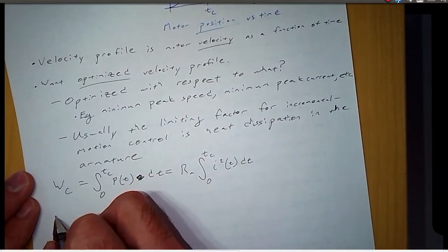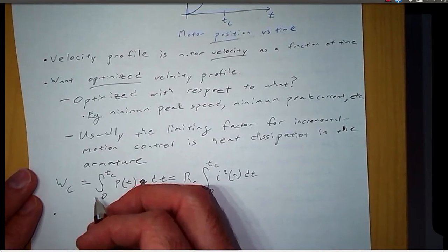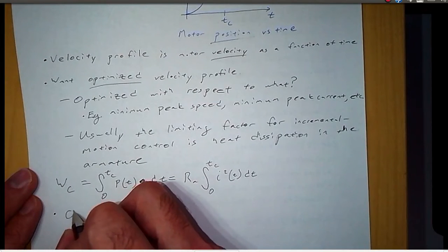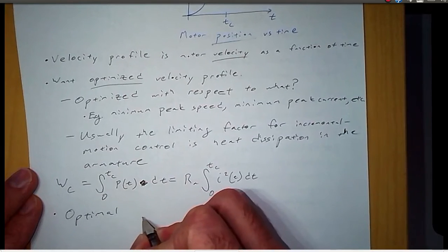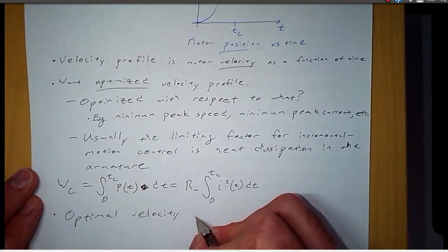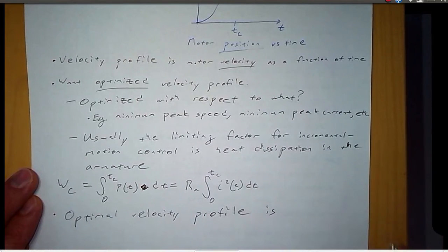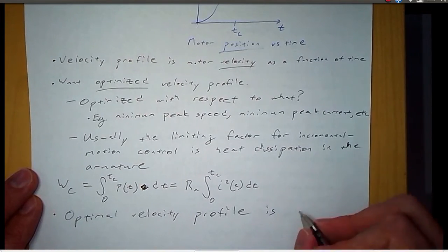And it turns out that, for this criteria, if we optimize it with respect to the heat dissipated, the optimal velocity profile turns out to be parabolic.